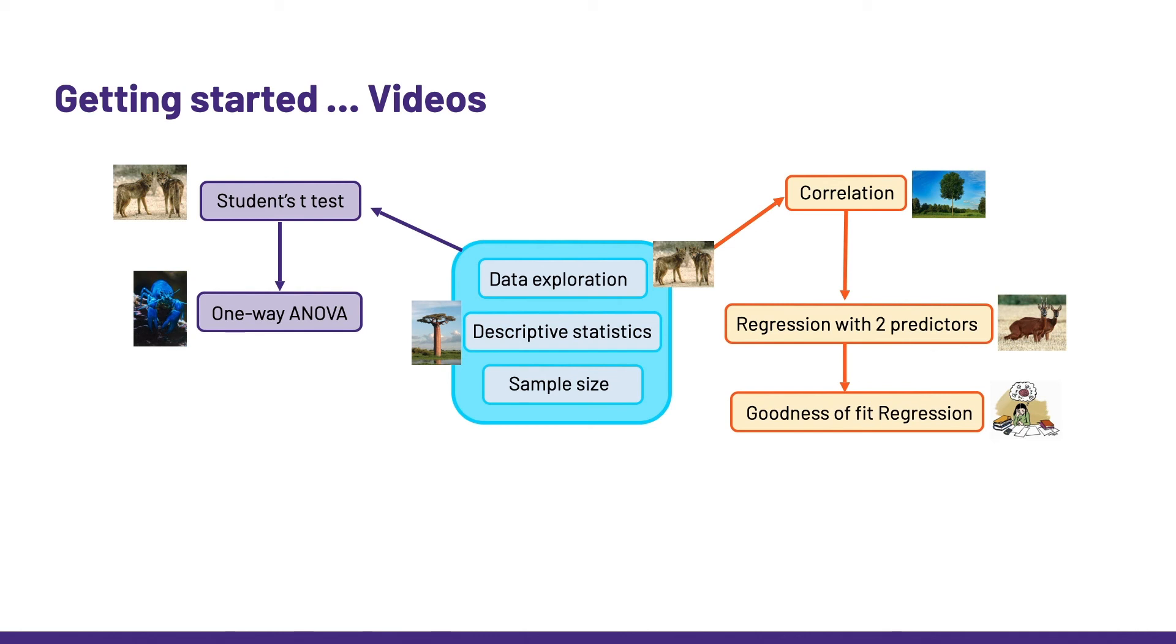The tests I just mentioned belong to the parametric family, as in they work well on data which behave in a particular way, which I explained in the video on descriptive statistics. If they do not behave in a parametric way, we should probably consider non-parametric statistics.